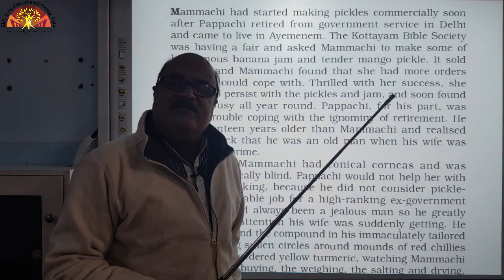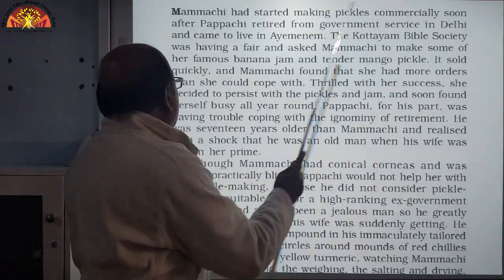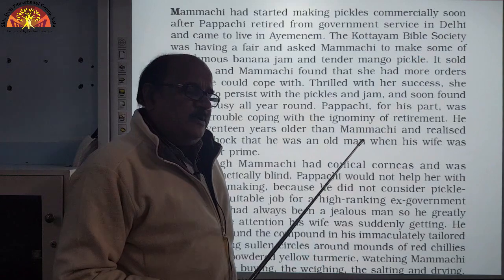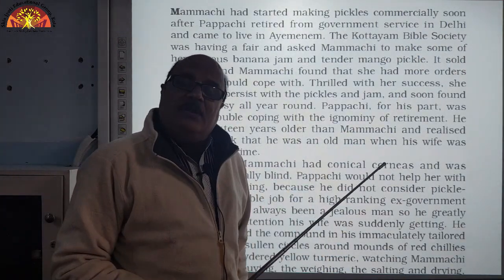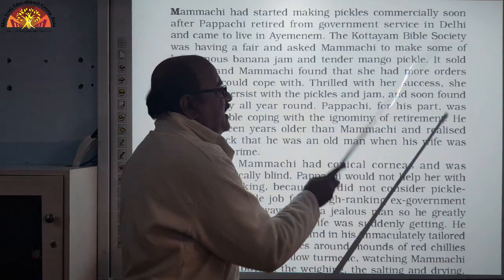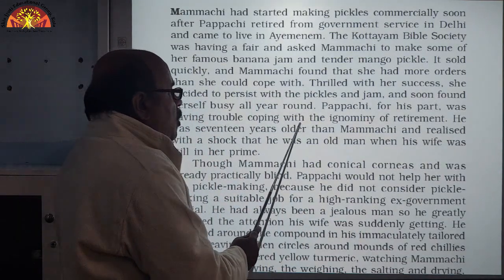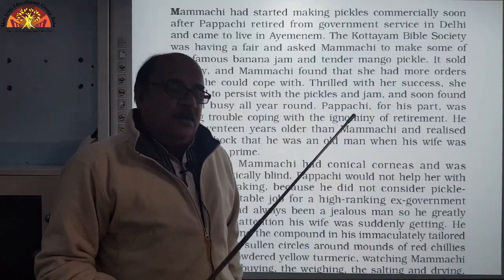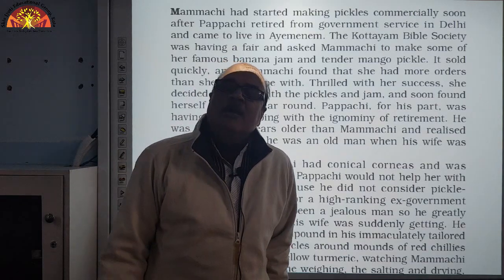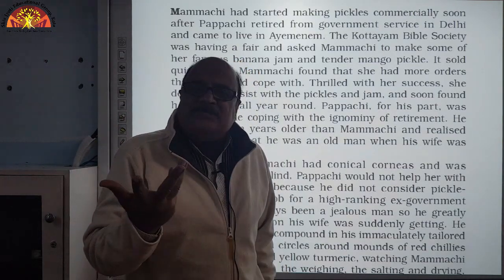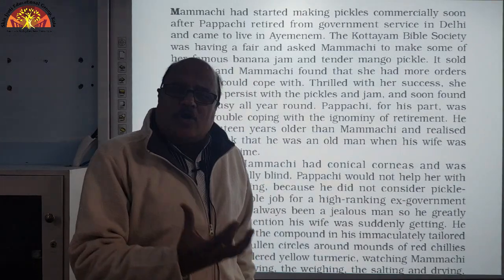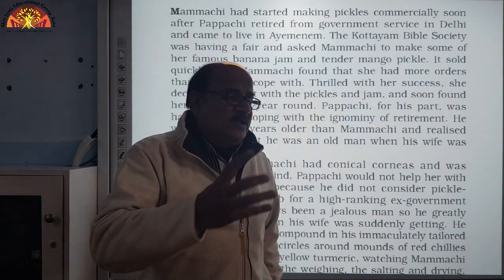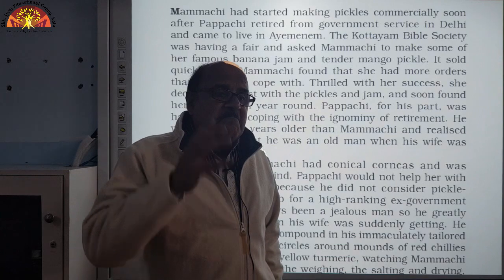Papaji, for his part, was having trouble coping with the ignominy of retirement. He was not happy about his retirement, though it was compulsory. He had frustration and was unable to bear it. He was 17 years older than Mamachi, which was also one of the causes of frustration. Papaji had inferiority complex and was a violent, aggressive character from the very beginning.